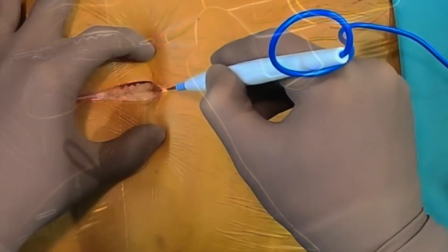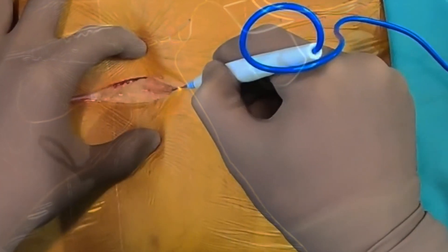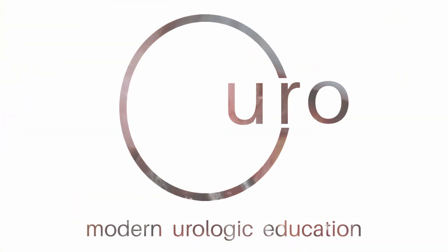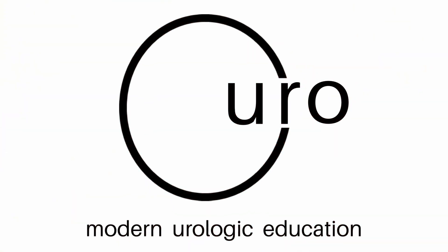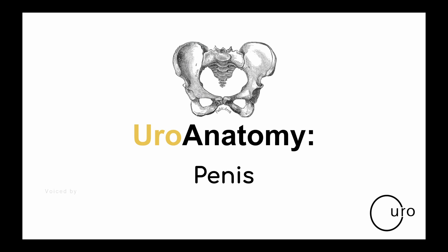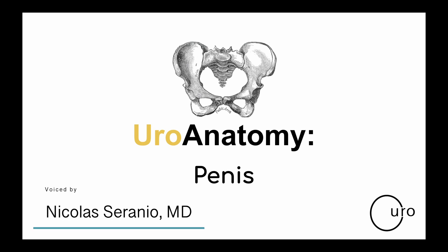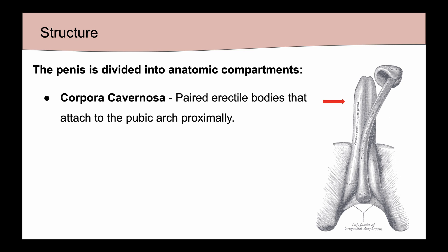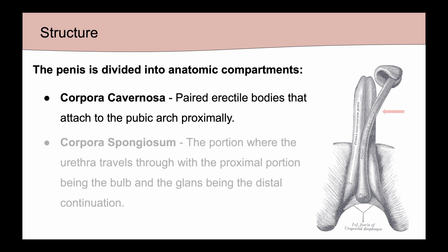In this episode we'll be reviewing the anatomy of the penis. The penis is divided into two anatomic compartments. We have the corpora cavernosa, which are the paired erectile bodies, and they attach to the pubic arch proximally.